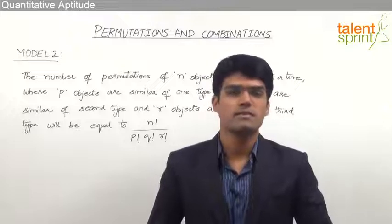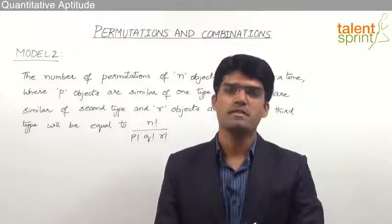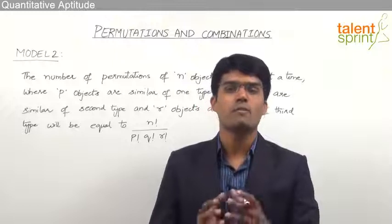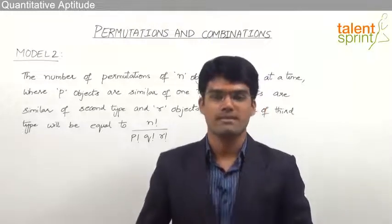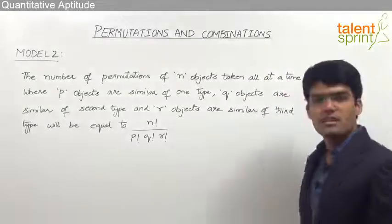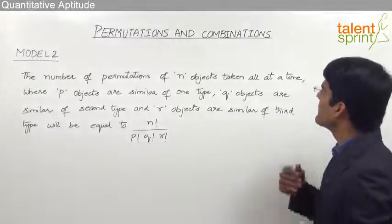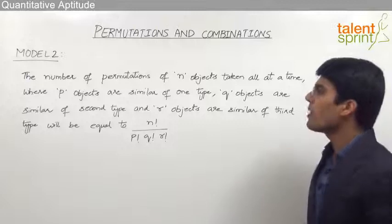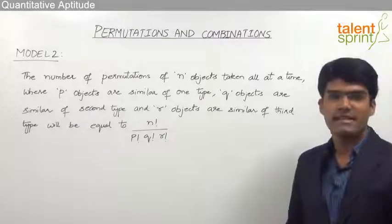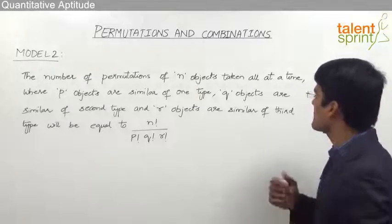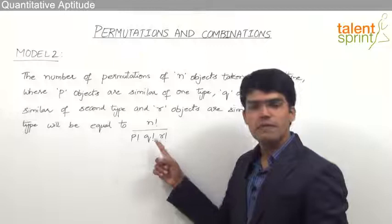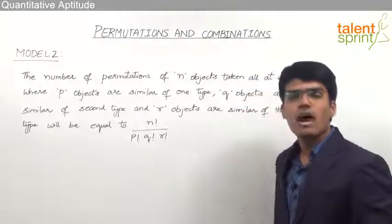Let us now take the second model from this topic of permutations and combinations, where we shall discuss questions related to arrangement or permutations of similar objects. The number of permutations of n objects taken all at a time, where p objects are similar of one type, q objects are similar of second type, and r objects are similar of third type, will be equal to n factorial divided by p factorial into q factorial into r factorial.